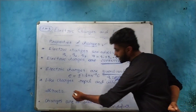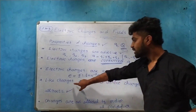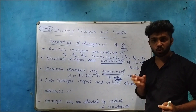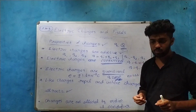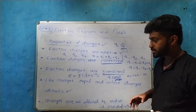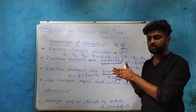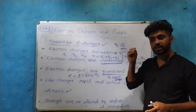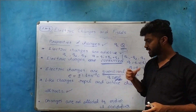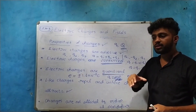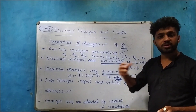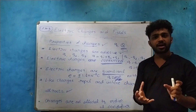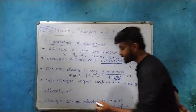The next property is that like charges repel and unlike charges attract. There are two kinds of charges: positive and negative. If there are only positive charges in a system, they are like charges. Similarly, only negative charges are also like charges. If there are both positive and negative charges in the system, they are unlike charges, and unlike charges attract each other.